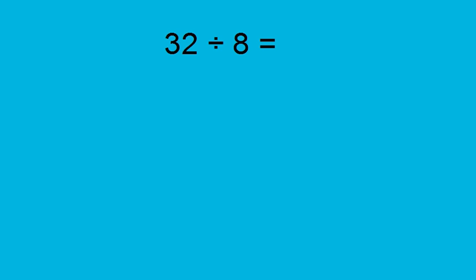In this case, we have 32 divided by 8. So we're going to start with 32, and we're going to subtract this 8 right here. So 32 minus 8 equals 24.